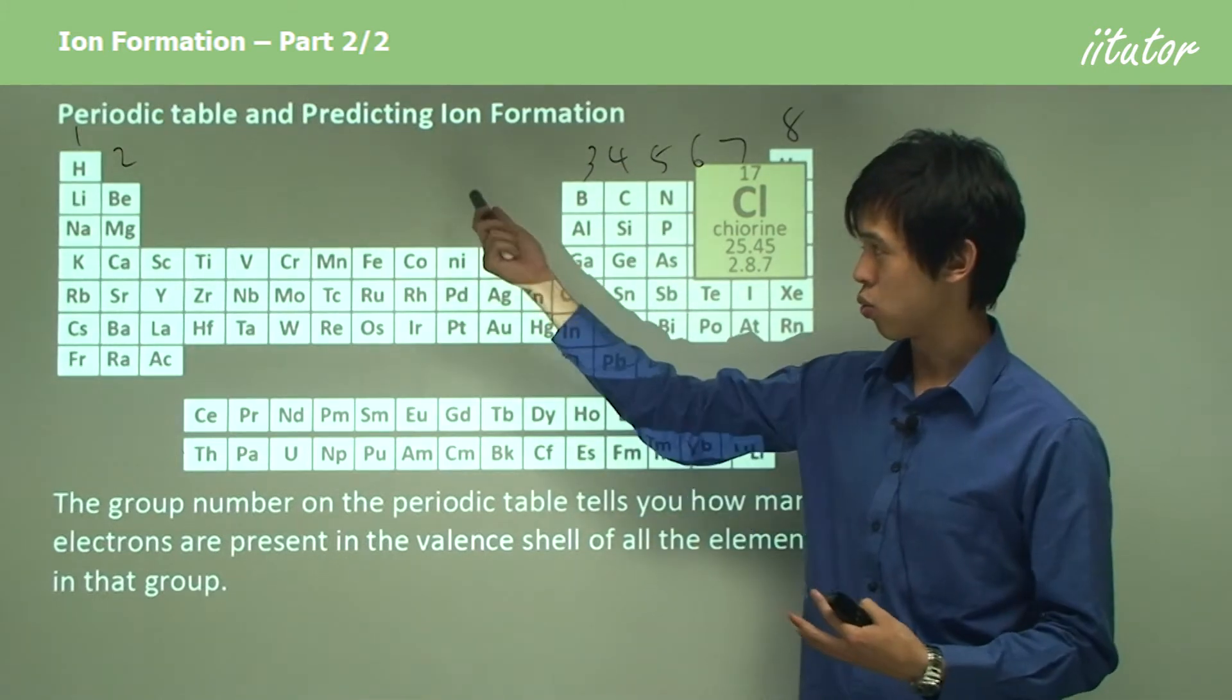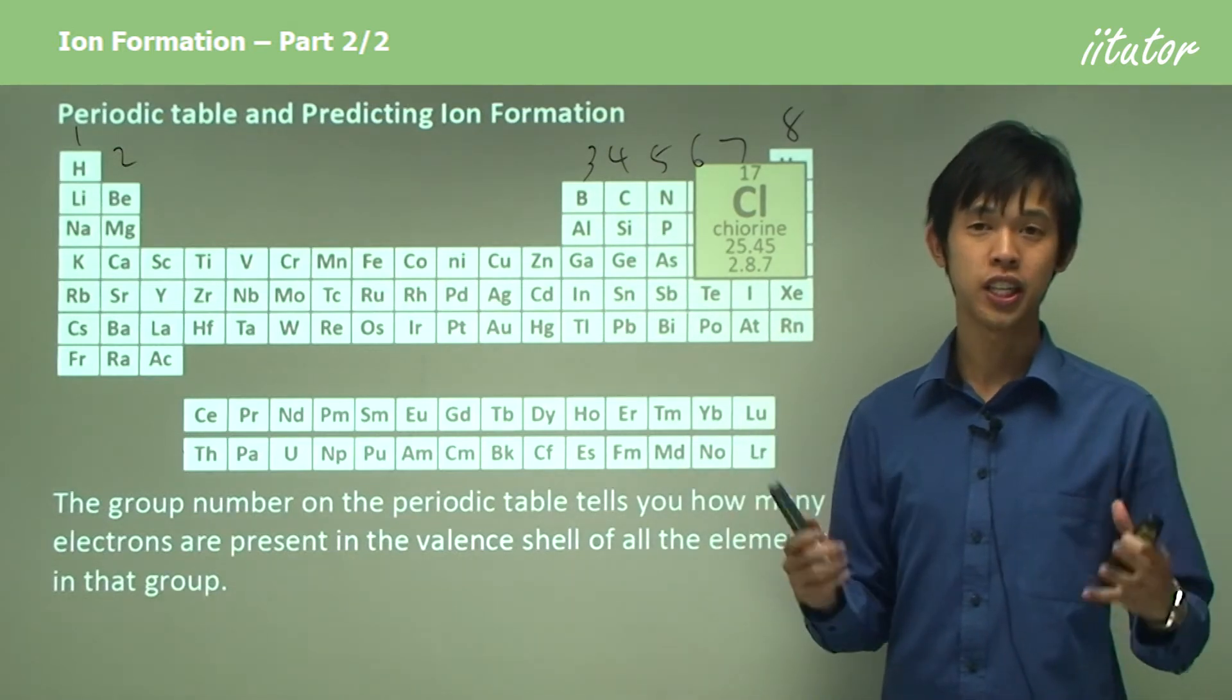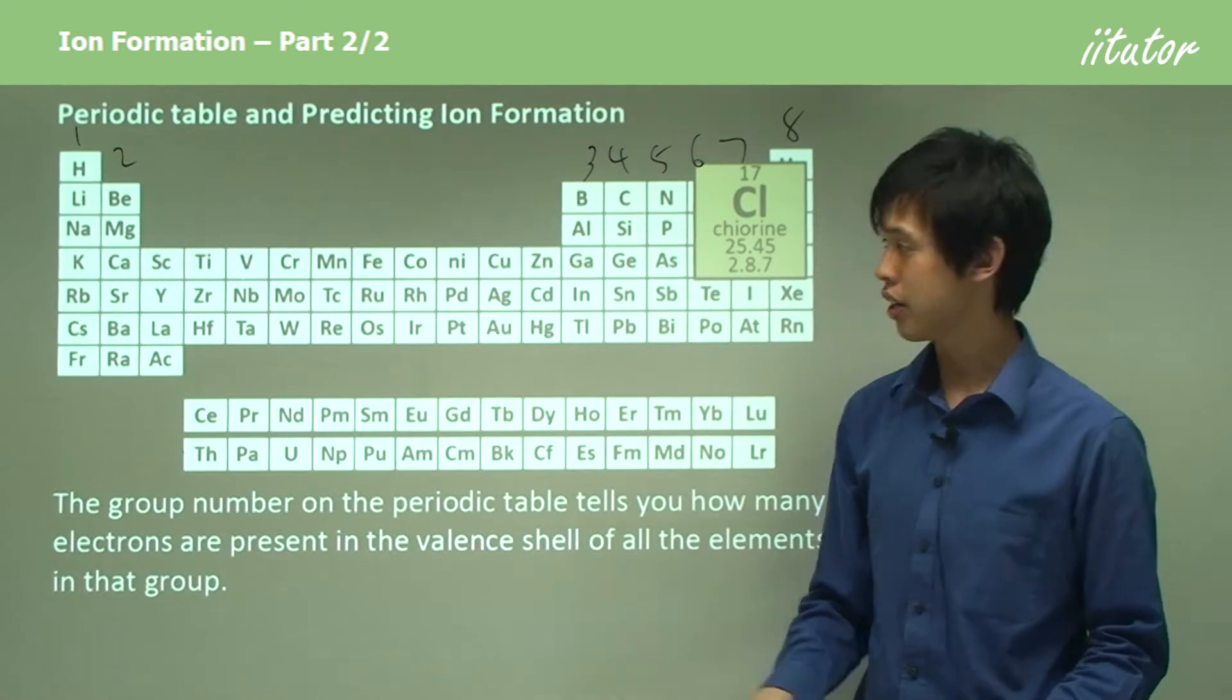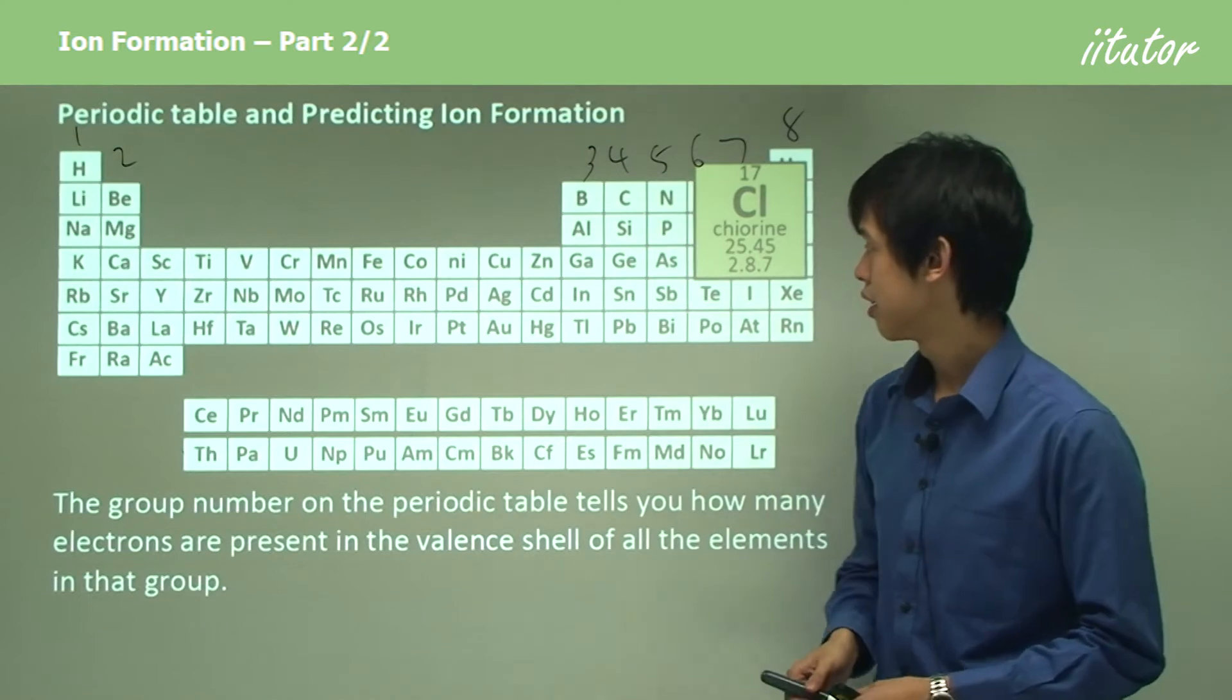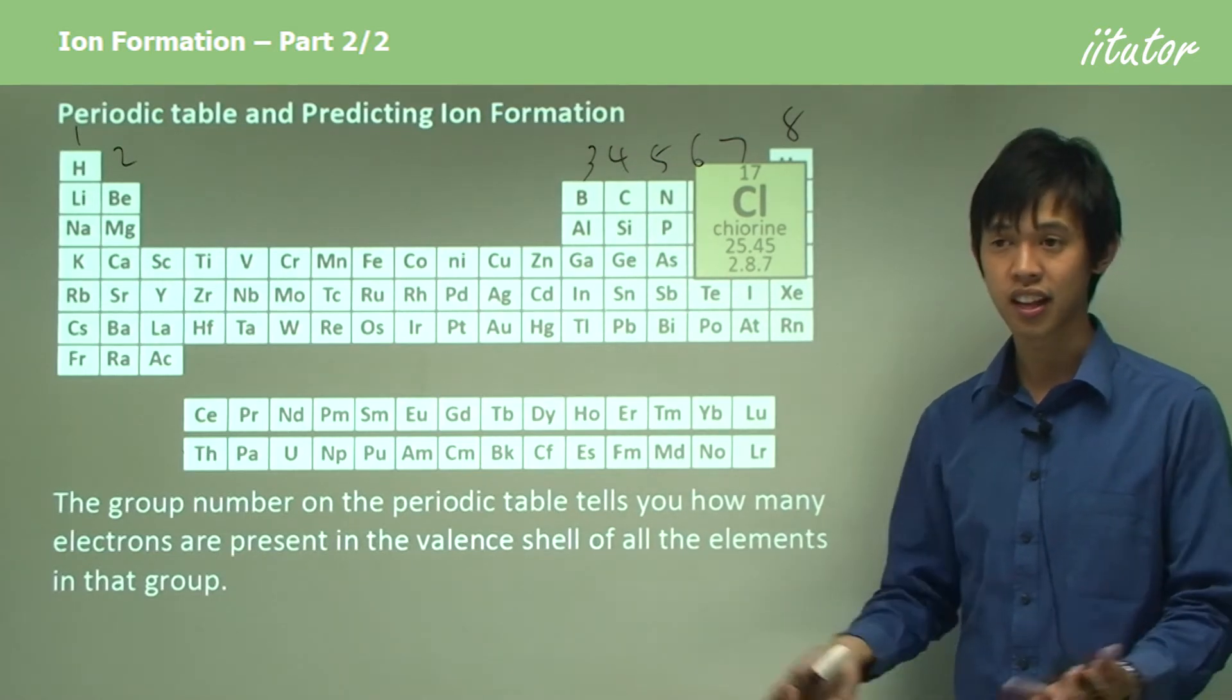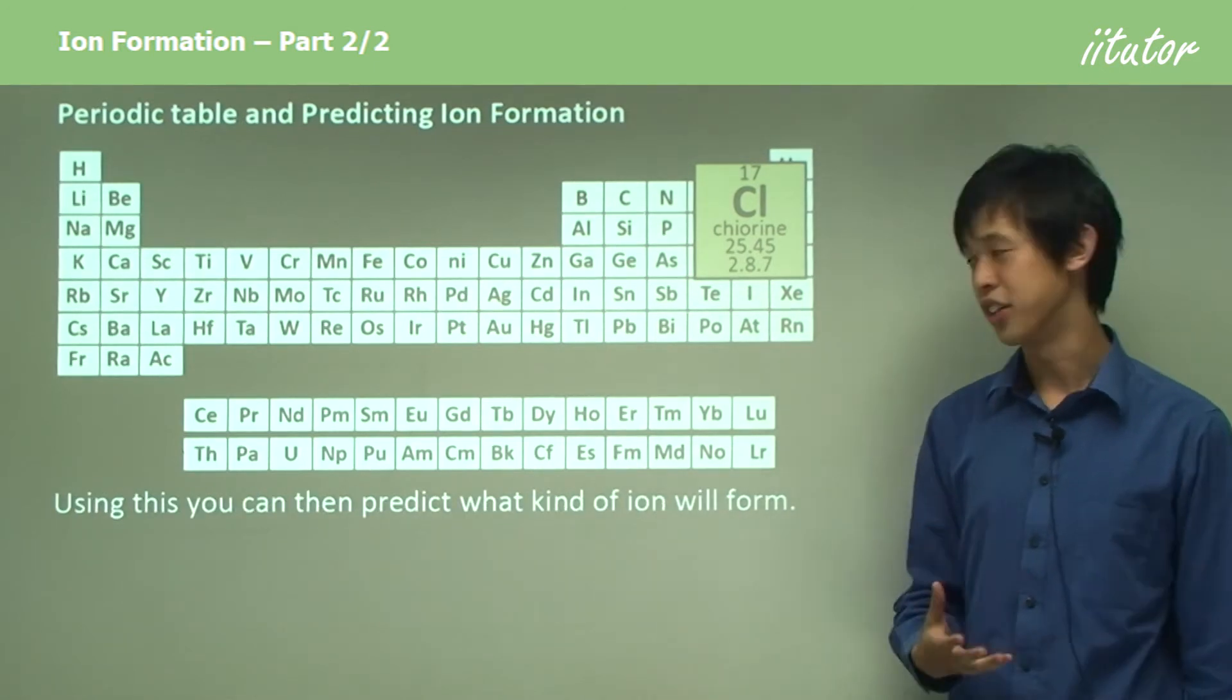It actually tells you how many electrons are in its outermost shell. If I look down group one, I can predict that lithium will have one outermost shell electron. Potassium will also have one outermost shell electron. Carbon will have four outer electrons in its valence shell. Xenon will have eight. You can see there's a lot of information that these group numbers can tell you. Using that knowledge, we can predict what kind of ion will form.